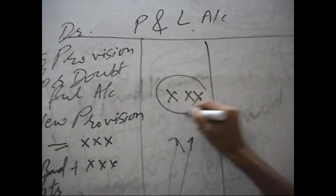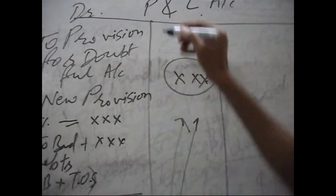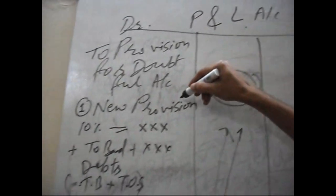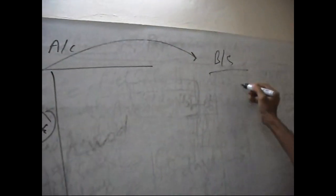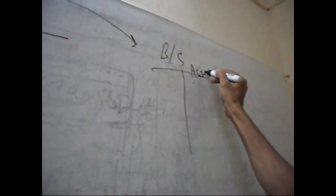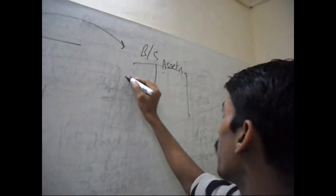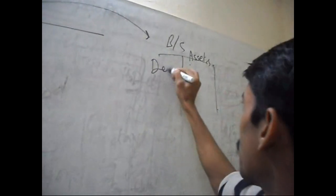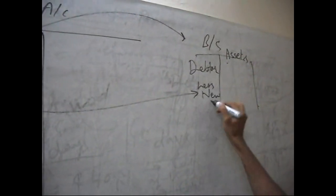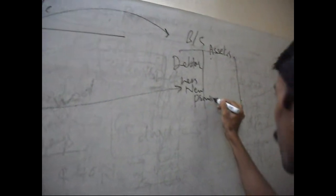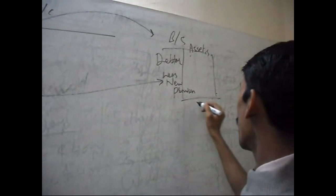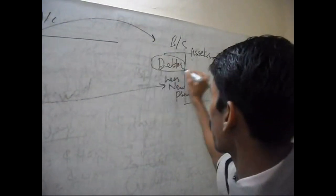And this new provision will be deducted in the balance sheet at the assets side. This is debtors, and you deduct this amount - less new provision, the net amount of debtor will be shown.